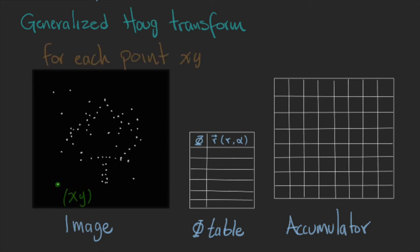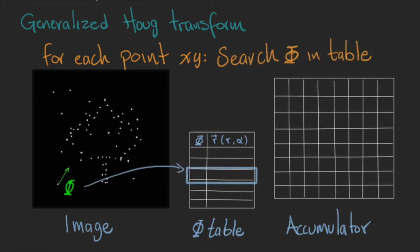So, for each point in the image, we will look at its gradient orientation, and we will search for it in the phi table. Remember that here we store all possible vectors r that are pointing to the anchor point.